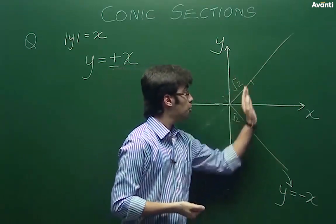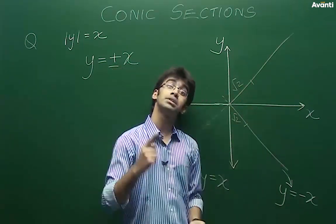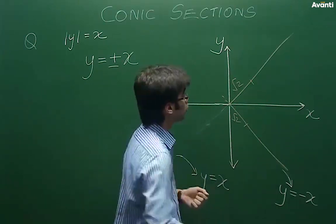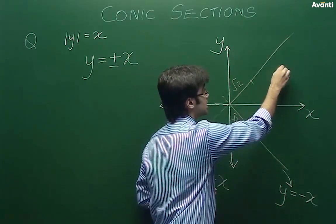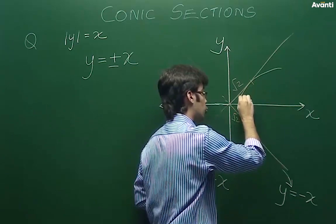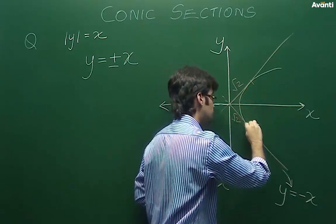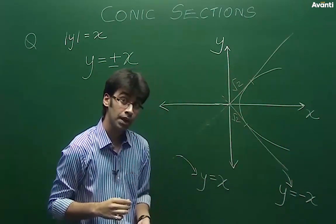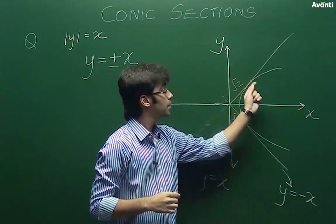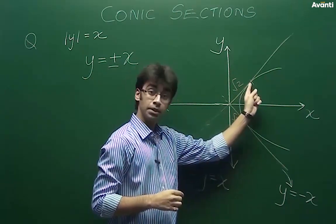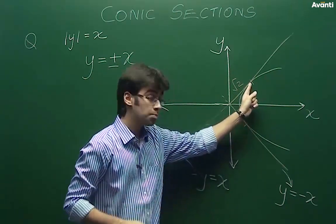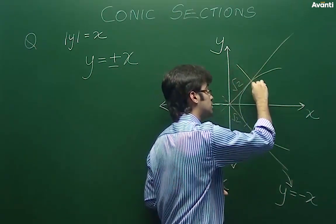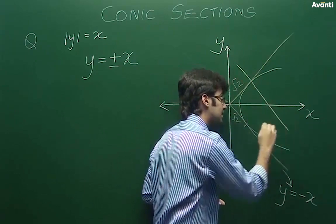अब अगर ये दोनों parts निकल गए, तो जो बचे हुए दोनों points हैं, उनमें सिर्फ एक ही circle बन सकती है। और वो circle होगी कुछ इस तरीके से, जो दोनों lines को उन points पे tangent बन रही हो। अब अगर circle यहाँ पे है, तो इस point पे tangent बन रहा है, तो यहाँ से जो perpendicular होगा, वो center से pass करना चाहिए।